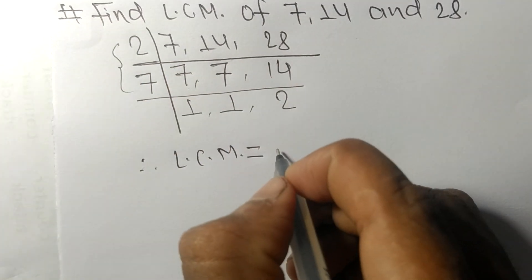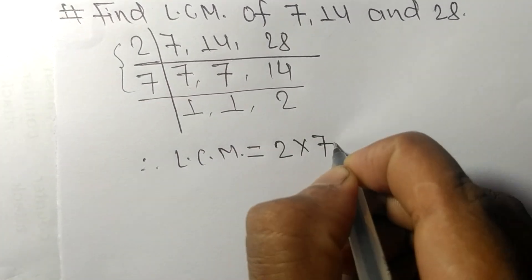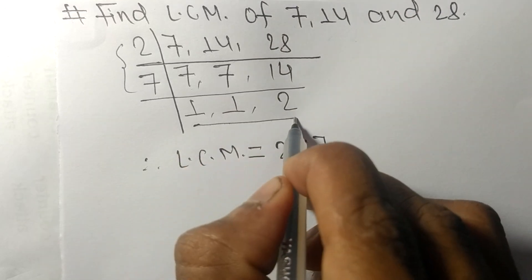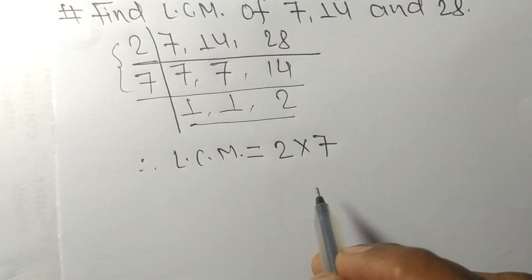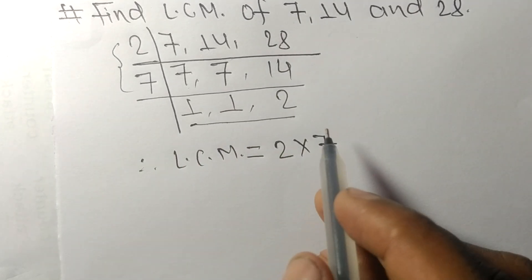From this side it is 2 and 7. From this side we choose the numbers greater than 1, that is only 2.